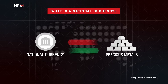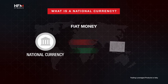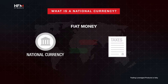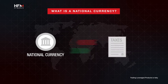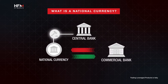Nowadays, most currencies are fiat money, meaning that the promise to pay consists of the promise to accept that currency for the payment of taxes in that country. In the broader sense, the central bank enforces the use of that specific currency, making sure that all commercial banks accept the currency when the public presents it to them.